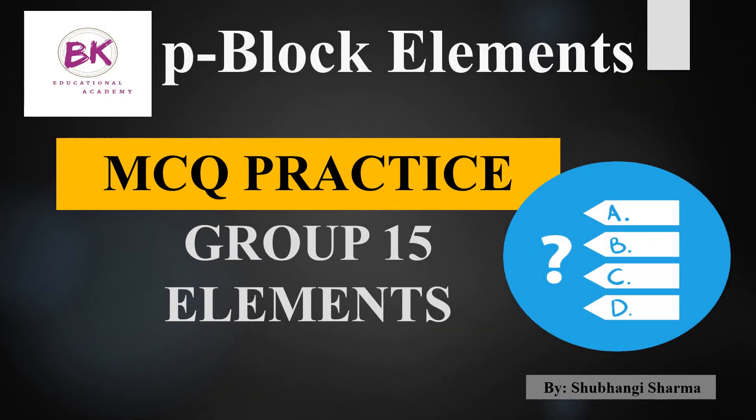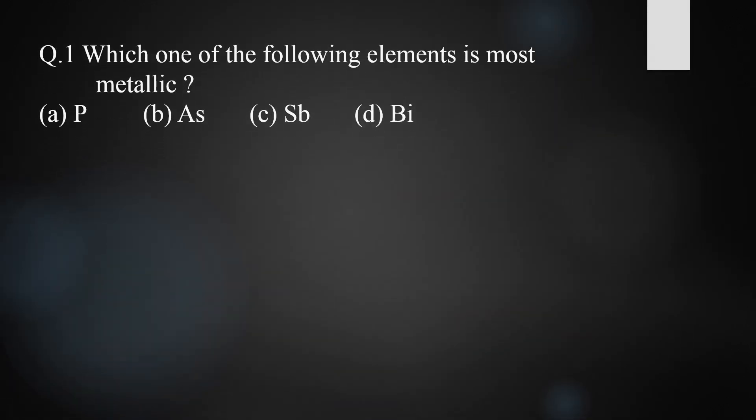Welcome students. Here I will discuss some important multiple choice questions on Group 15 elements. Let's start with question one: which one of the following elements is most metallic in nature? The Group 15 elements given as options are phosphorus, arsenic, antimony, and bismuth.